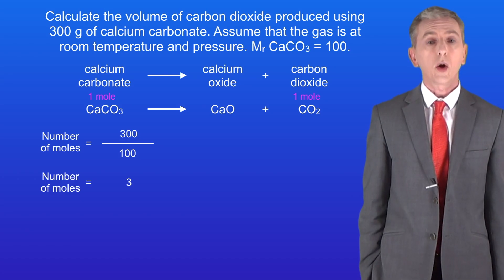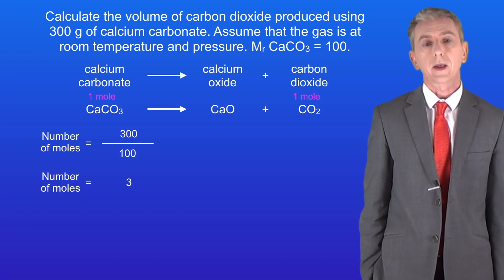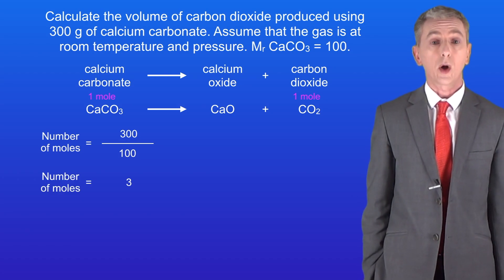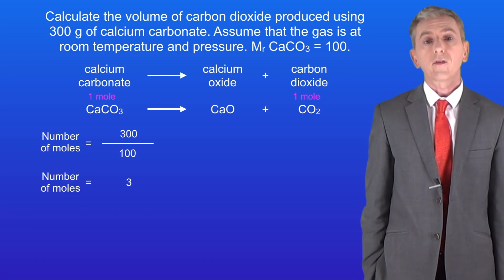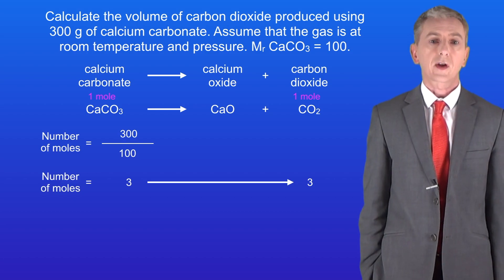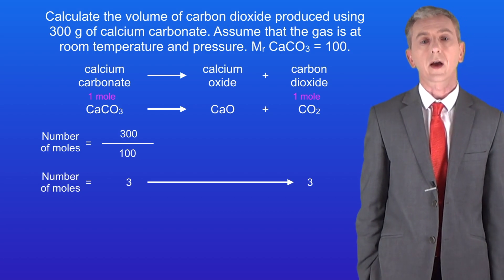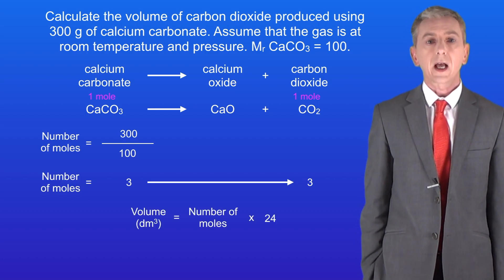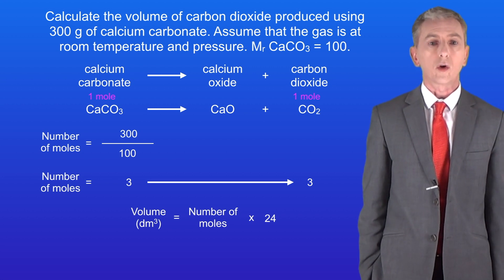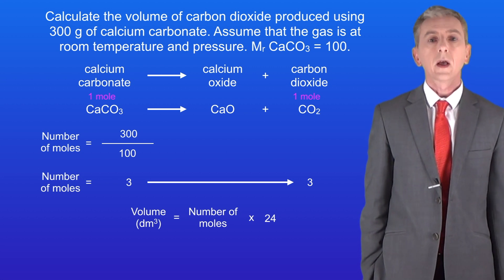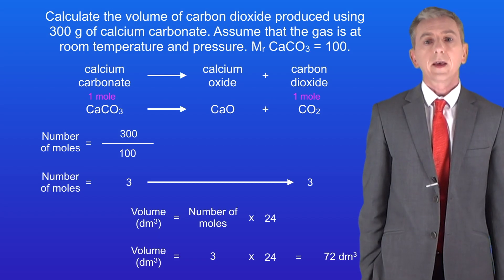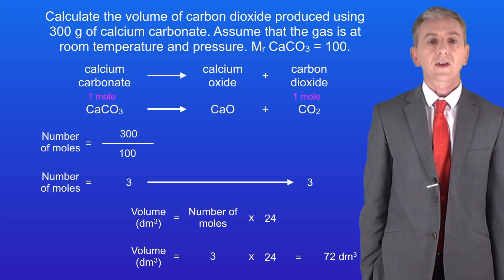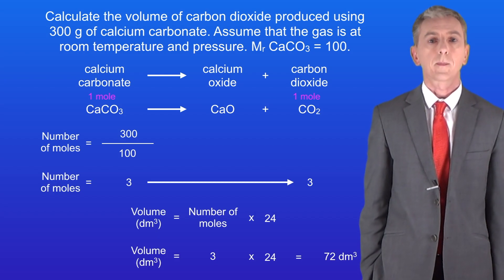As we saw before, one mole of calcium carbonate produces one mole of carbon dioxide. Therefore three moles of calcium carbonate will produce three moles of carbon dioxide. To calculate the volume we multiply the number of moles by 24. Three multiplied by 24 gives us a volume of 72 decimetres cubed, and that's our final answer.